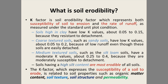Sandy soils have low K values because of low runoff, even though these soils are easily detached. Medium textured soils such as silt loam have moderate K values ranging from 0.25 to 0.4, because they are moderately susceptible to detachment. Soils with high silt contents are the most erodible of all soils.